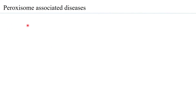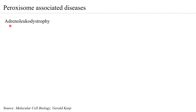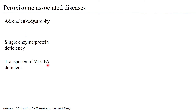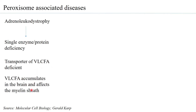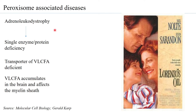Another disease associated with peroxisomes is adrenal leukodystrophy, commonly termed ALD. This disease is caused by a deficiency of a single enzyme or protein in the peroxisome — specifically the transporter of very long chain fatty acids. We know that VLCFAs are metabolized inside peroxisomes, but if the VLCFA transporter does not function properly, VLCFAs are not taken up, and they begin to accumulate especially in the brain, affecting the myelin sheath. A movie named Lorenzo's Oil was made to address this disease.